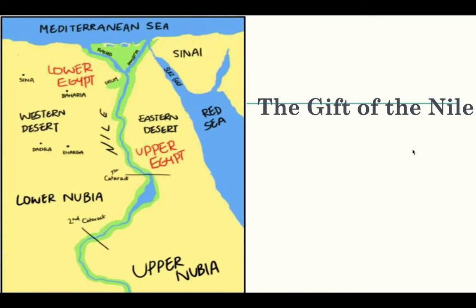Looking at this map, upper Egypt was upriver of the Nile. Upper Egypt is here and lower Egypt is here. The Nile River flows north — it flows up into the Mediterranean Sea. This land is higher, more mountainous, so this is upper Egypt, and the Nile flows north down into lower Egypt.